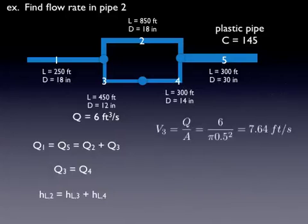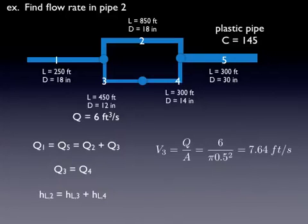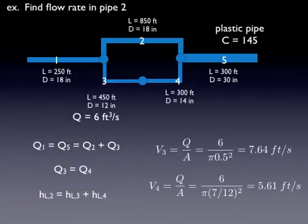Okay, we can calculate some velocities here. We know the flow rate in three, so the velocity in three is easy to calculate. The velocity in four can also be calculated because the flow rate, we just said the flow rate is the same in four. So we can do that.